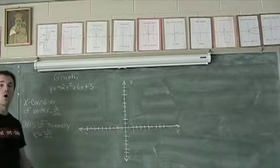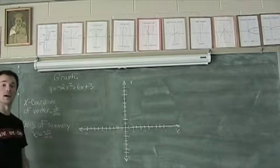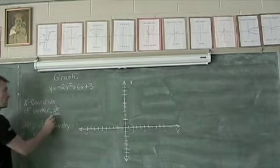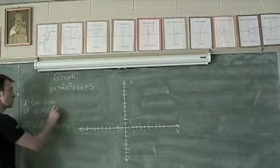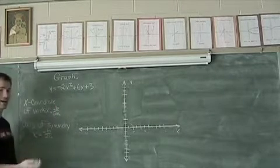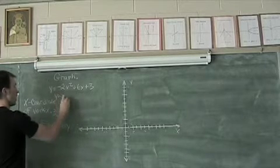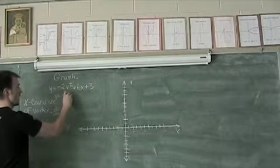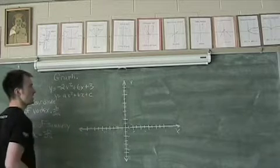So the first thing I want to do when I'm graphing these types of things is locate my vertex. The x-coordinate of the vertex is actually hidden somewhere within our equation, and it's equal to the opposite of our b value divided by 2 times the a value. Again, those a and b values come from understanding that the standard form of this equation is y equals a x squared plus b times x plus c.